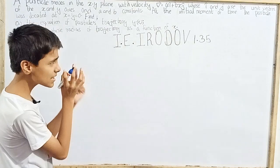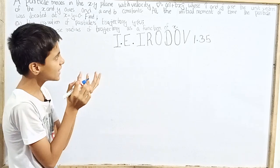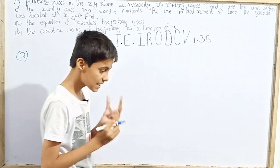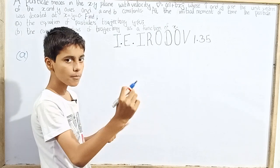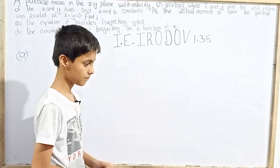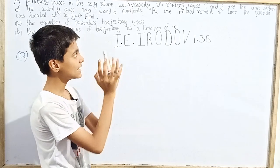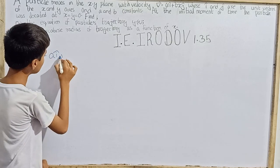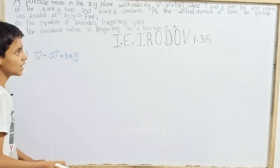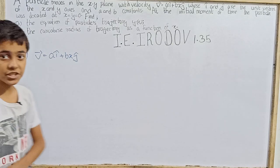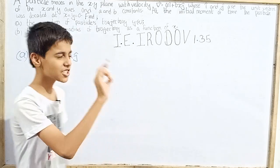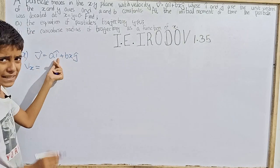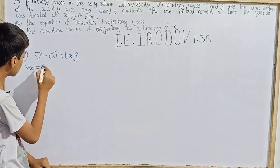The particle was initially placed at the origin. It was displaced because it has a velocity vector given by a·î plus bx·ĵ. We have to find the equation of the trajectory — the mathematical relationship between y and x. Here î is the unit vector along the x-axis and ĵ along the y-axis.